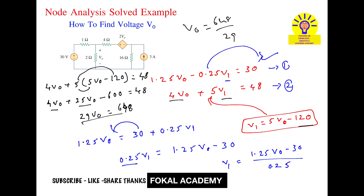V0 is approximately 22.34 volts. This is the voltage V0 across the 2 ohm resistor — this is the required voltage drop. This is the process of finding V0 by using node analysis. If you have any questions please comment, please subscribe, like and share. Thanks.